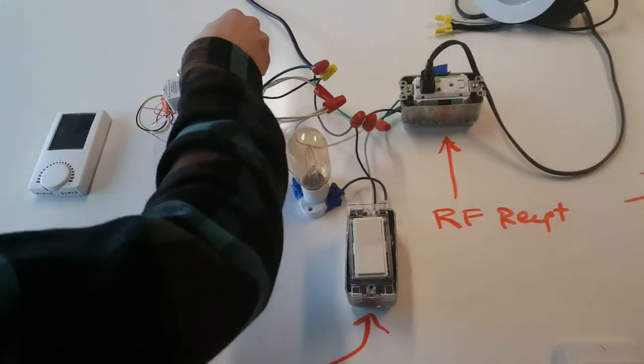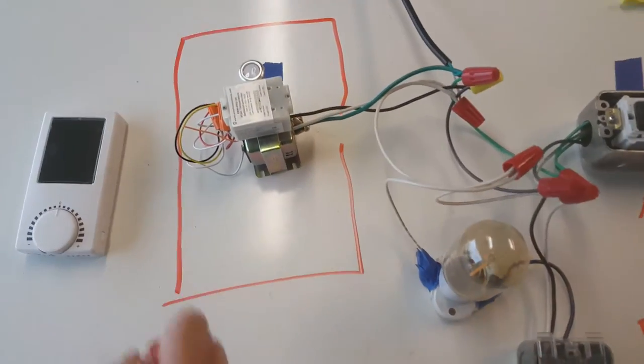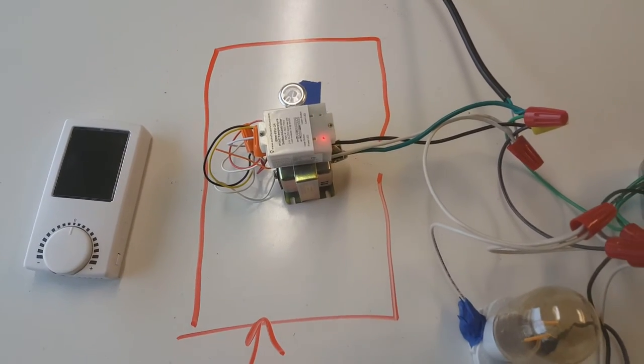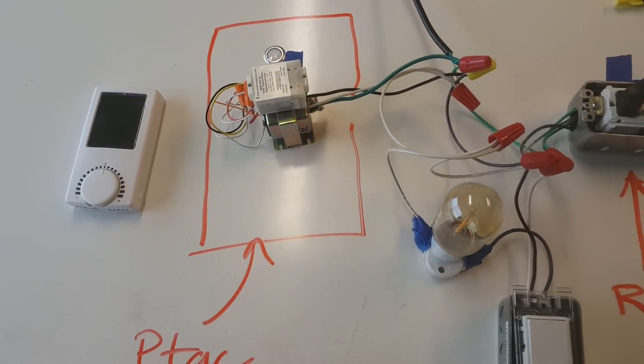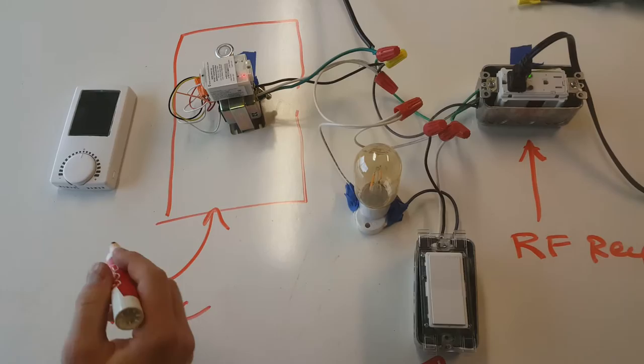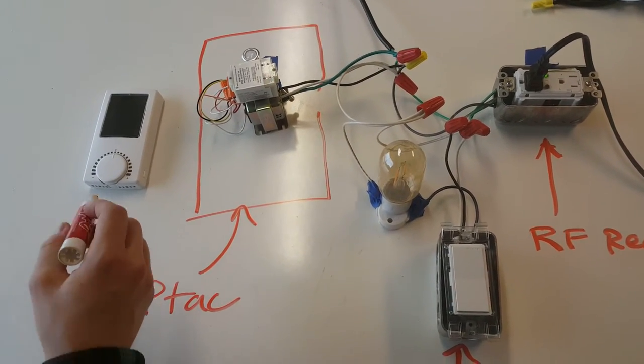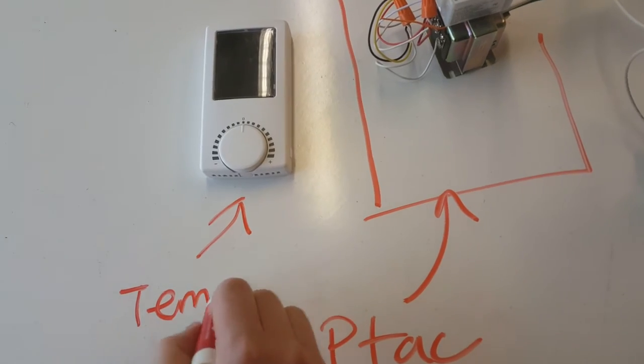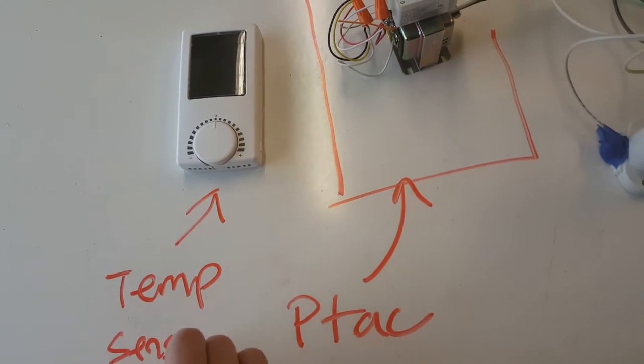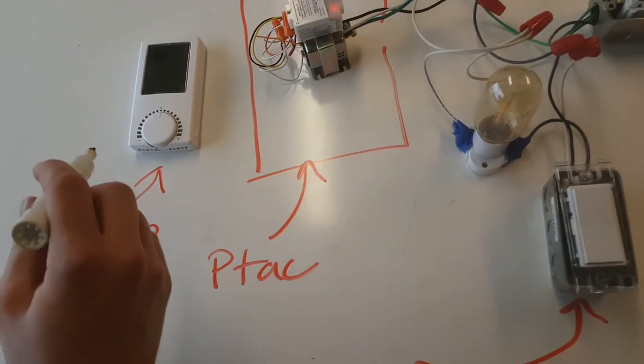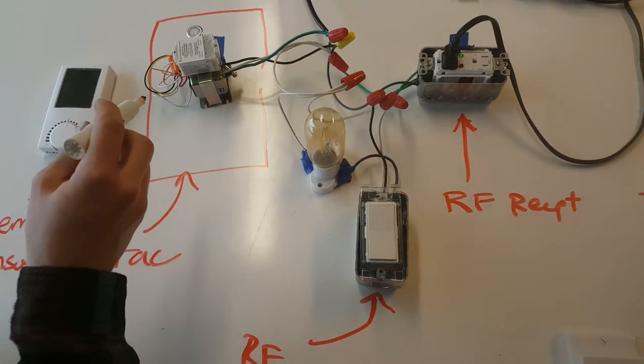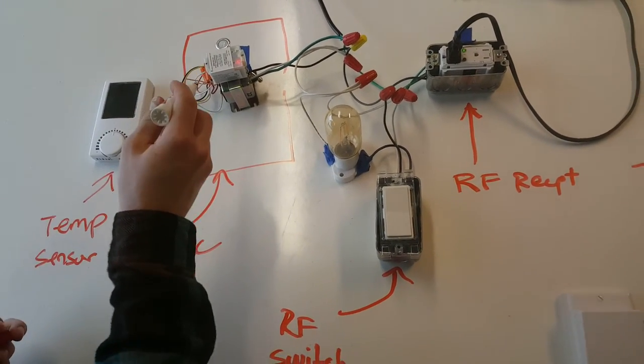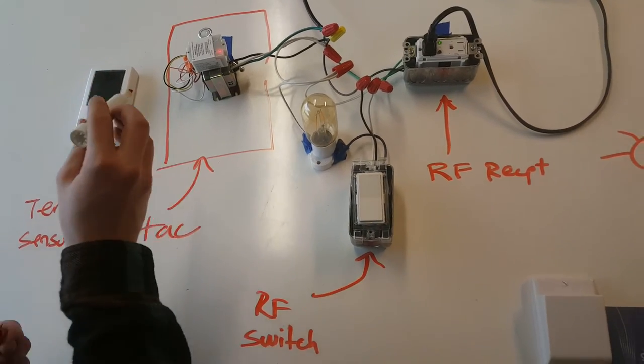Now over here we have our PTAC, which controls the temperature in the room, and along with the PTAC, we have a temperature sensor, which will, when the space is unoccupied, override the control of the PTAC.